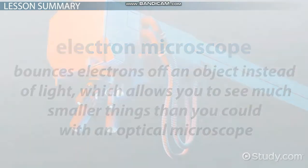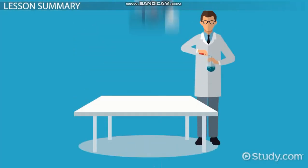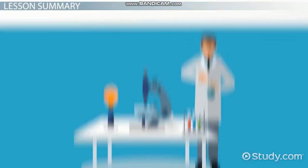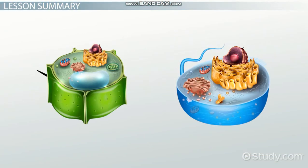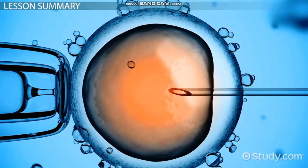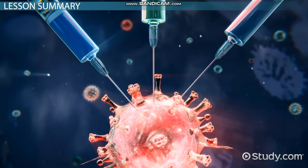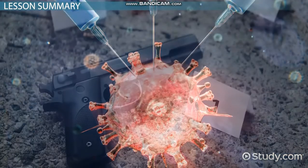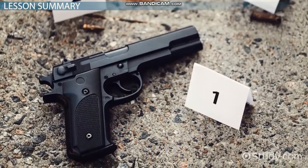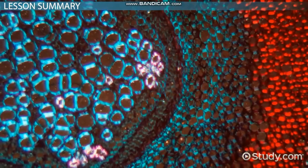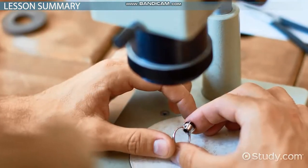Microscopes have many uses, especially in scientific research, in order to learn more about the world. Microscopes in medicine have bettered our understanding of the body and disease, and have allowed us to come up with all kinds of treatments. Microscopes are also used to analyze biological samples from medical patients, to look at bullets and DNA from crime scenes, to analyze the quality of ecosystems, and to look for flaws in jewels.